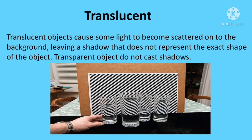Examples of translucent objects include tinted windows, frosted glass, sunglasses, wax paper, fingers, and certain plastics. Translucent, sometimes known as semi-transparency, is a form of transparency — it allows light to pass through, but unlike a transparent object, it does not allow that light to form a clear shape. Translucent objects only allow a small amount of light to pass through and do not follow the law of reflection.